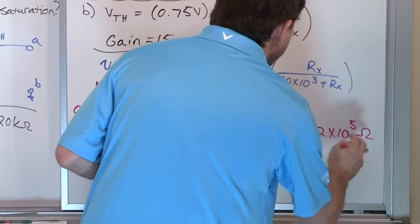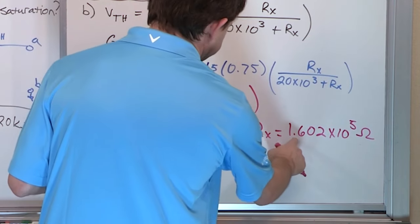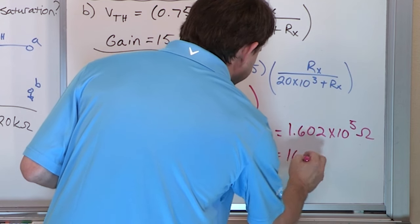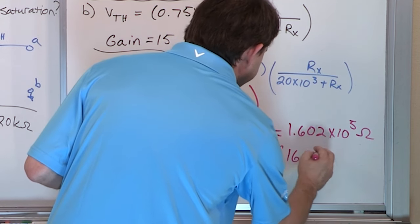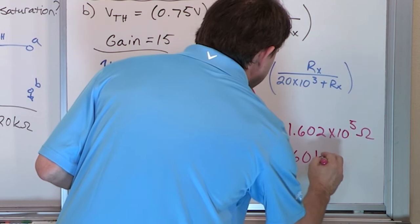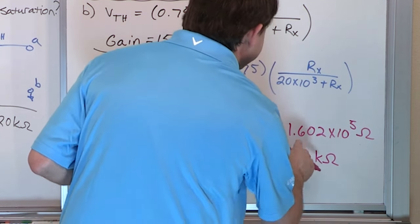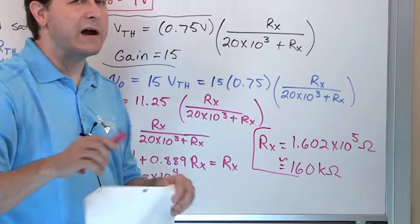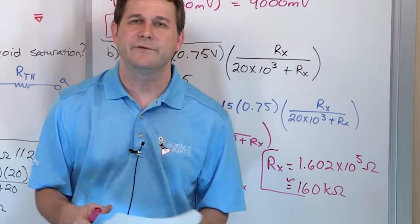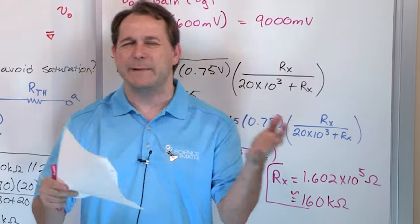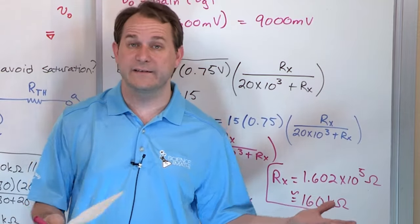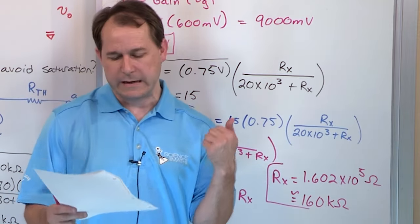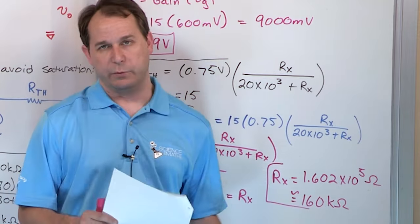So R_X is 1.602 × 10⁵ ohms — about 160 kilohms. As you do the calculations yourself, you'll carry a slightly different number of decimal places and might get a slightly different answer, but your answer should be pretty close to 160 kilohms.